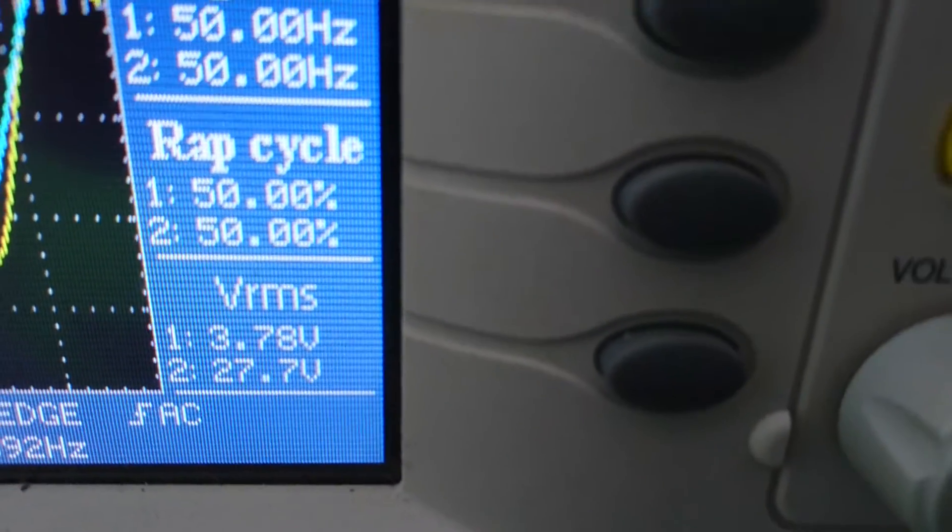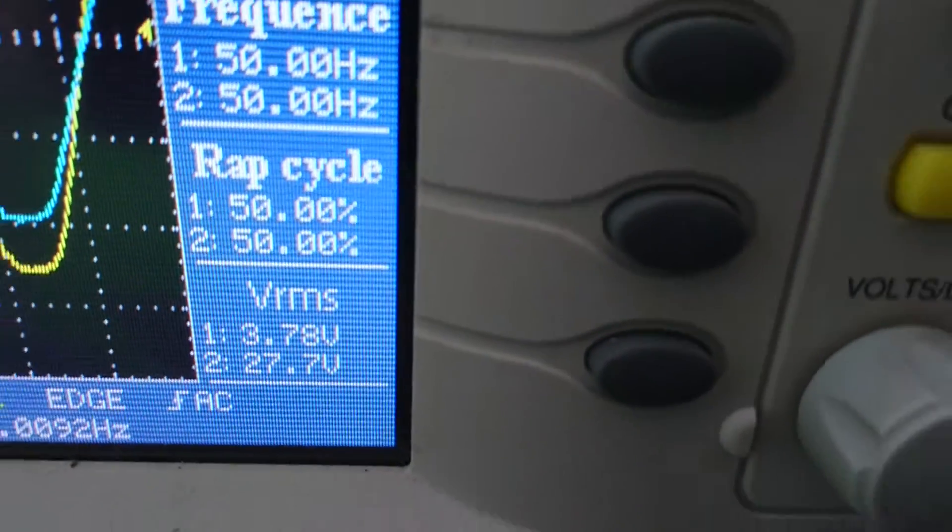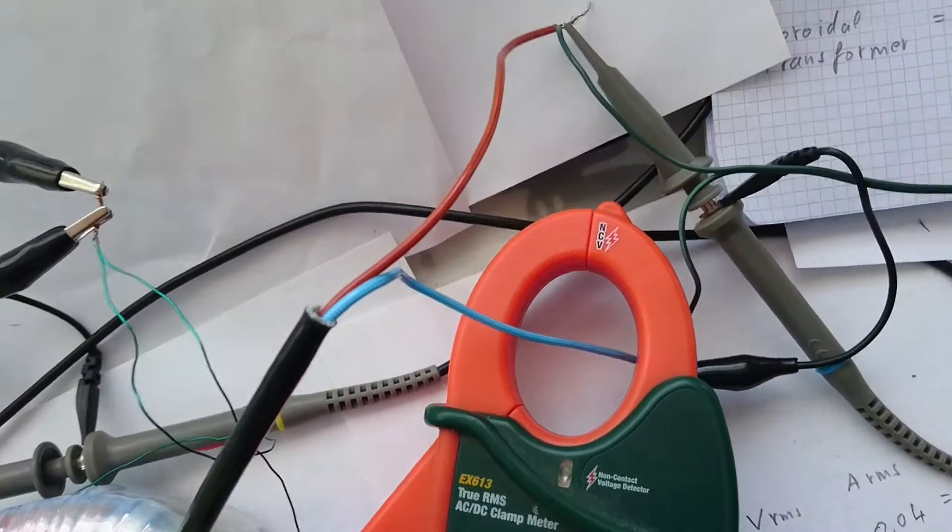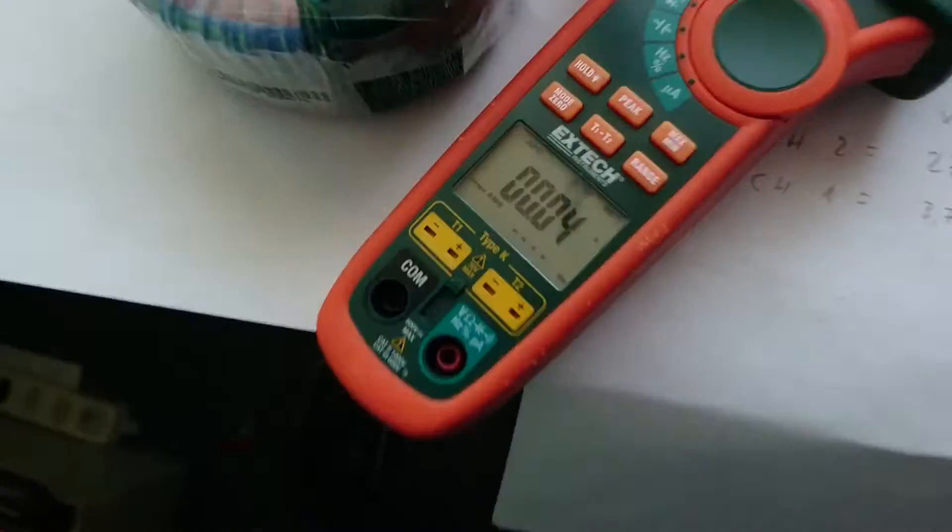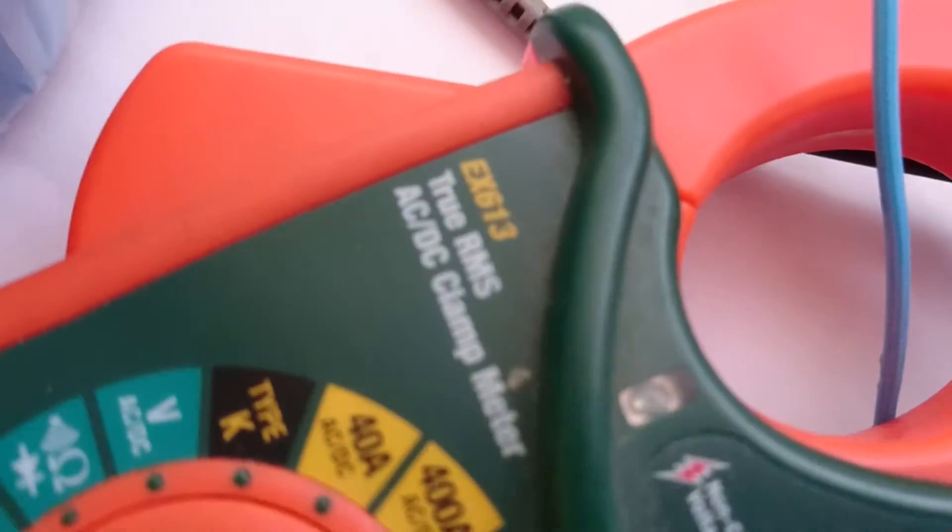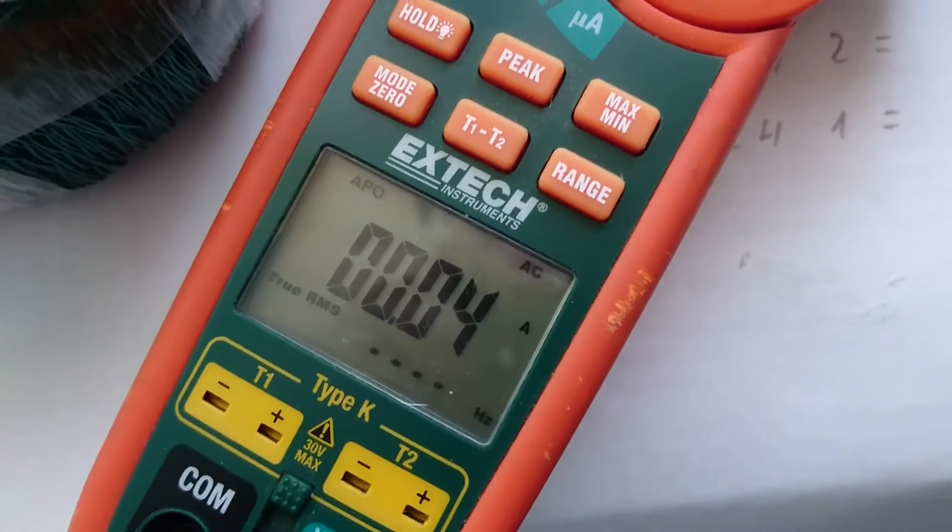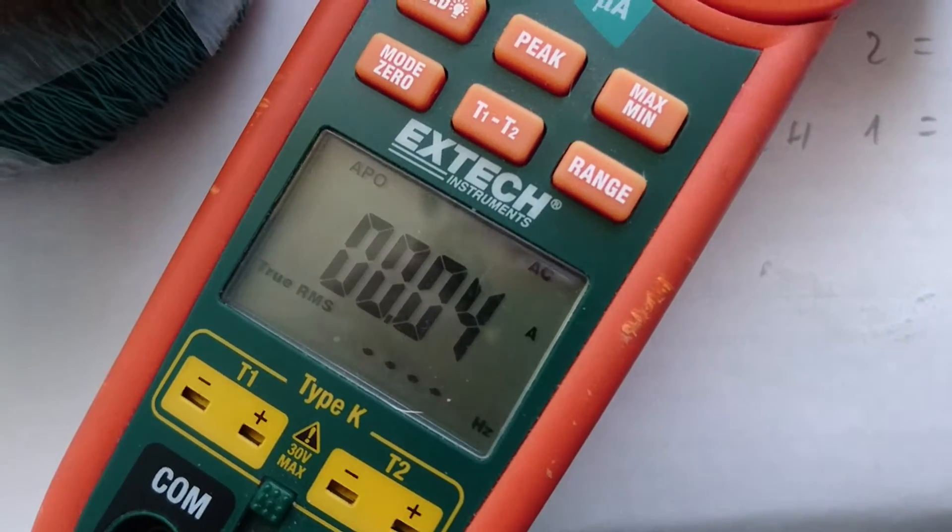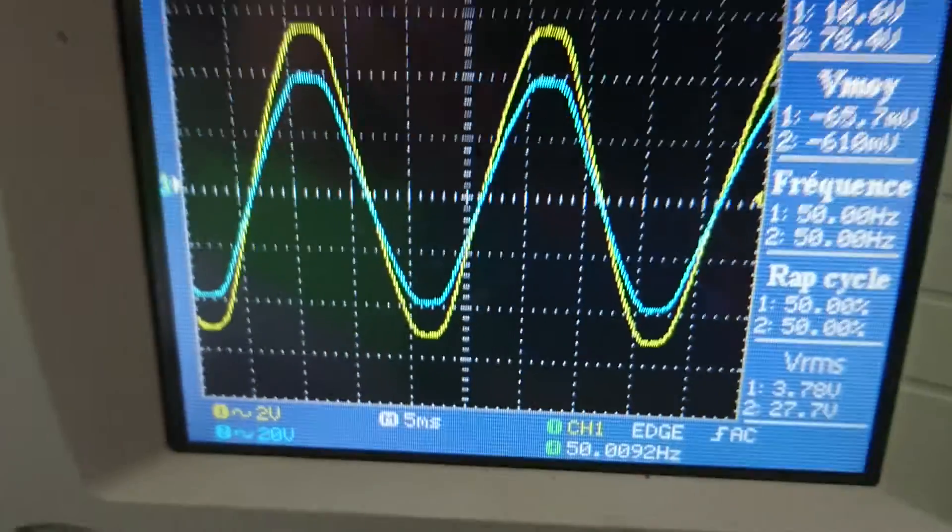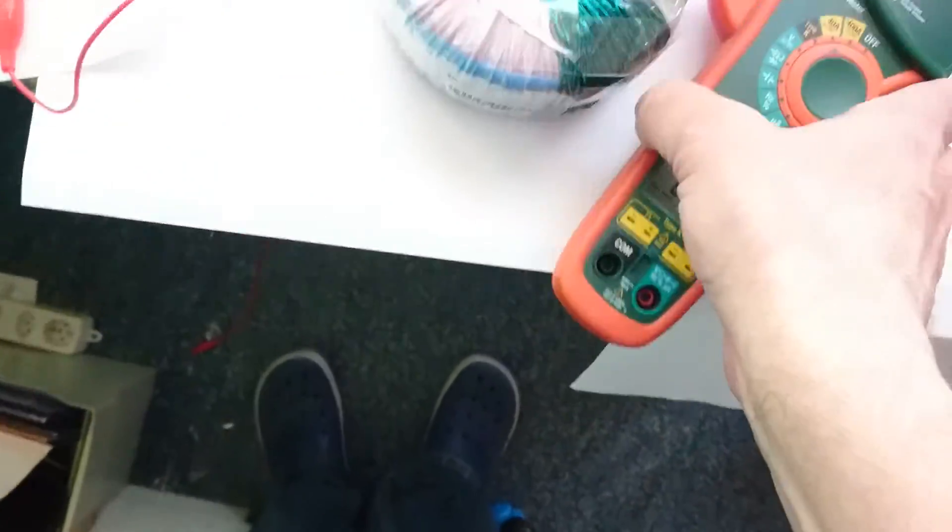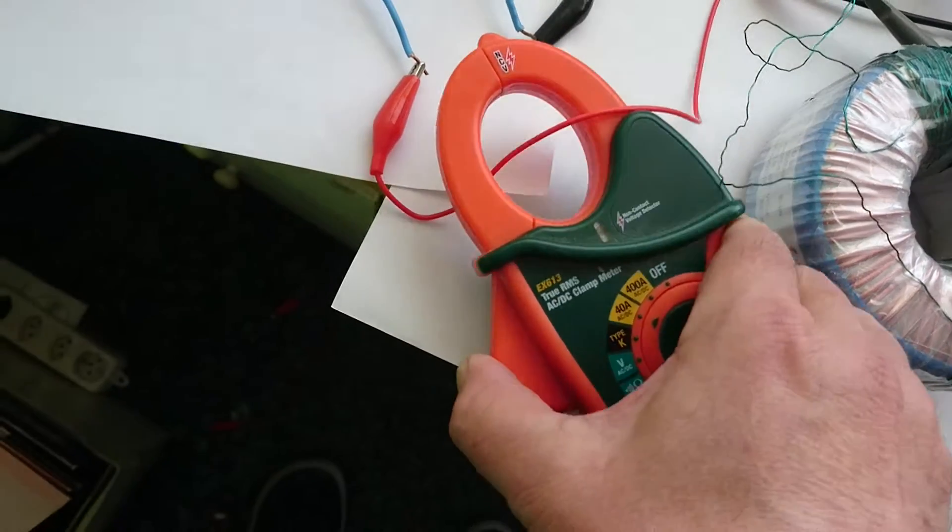Now on the current, I have put the clamp here across the input and measure with this high-end true RMS clamp meter. As you can see we have 40 milliamps RMS input at 27.7 volts. Now I will take the clamp and put it here on the output.